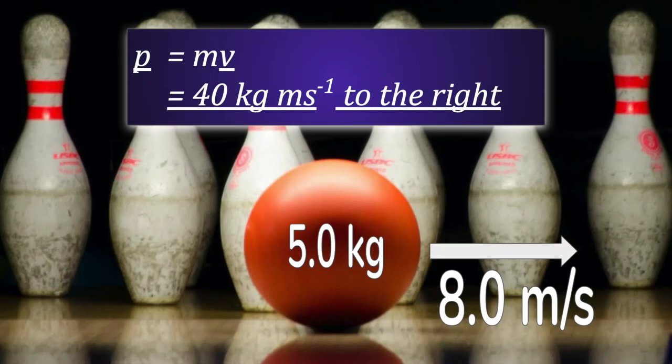This bowling ball of mass 5 kilograms has a velocity of 8 meters per second to the right, so its momentum is 40 kilogram meters per second, and it's directed to the right.